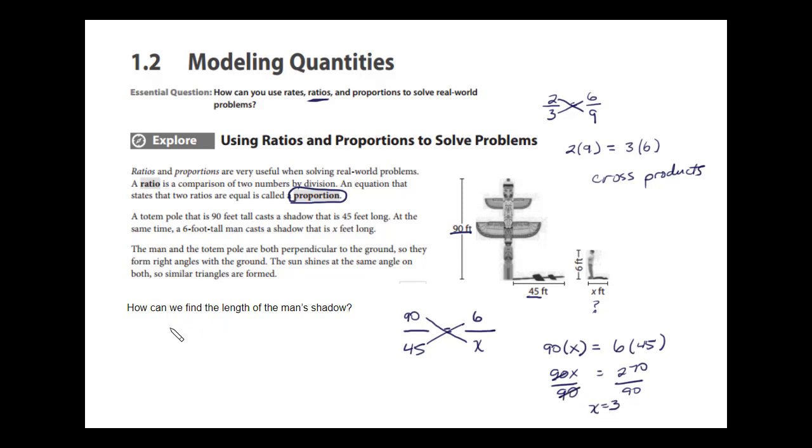The man's shadow is 3 feet long. Now, it kind of makes sense. If I'm 90 feet tall, I cast a 45-foot shadow. 45 is exactly half of 90. So a 6-foot-tall man should cast a shadow that's half his length at that time. Half of 6 is 3, and that makes sense.